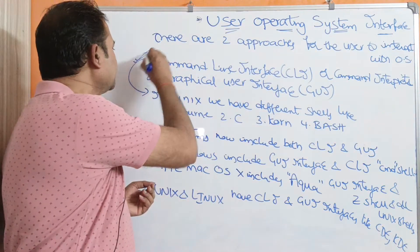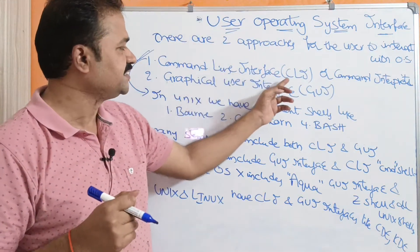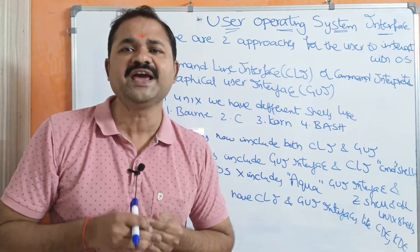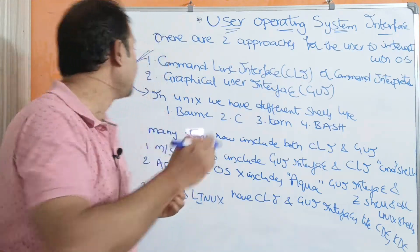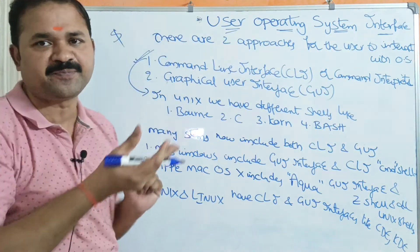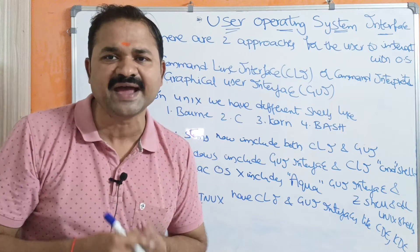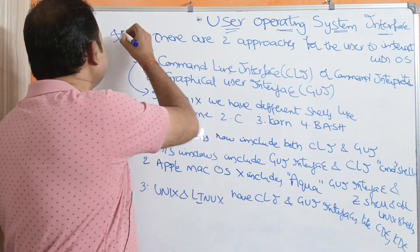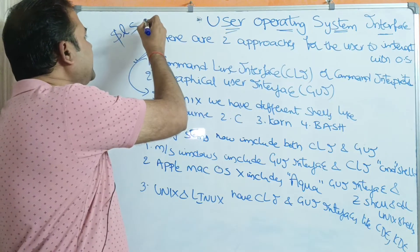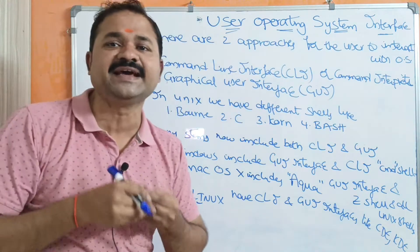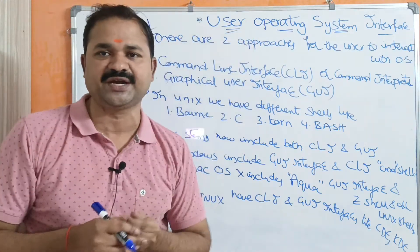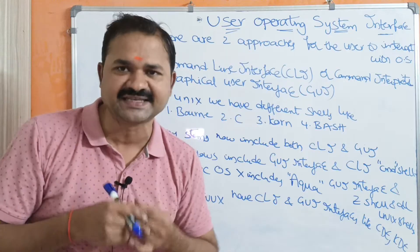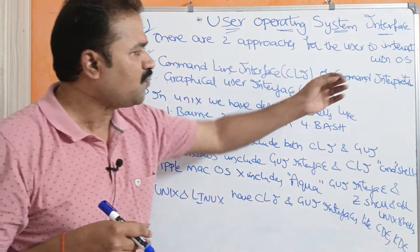First, let us see about the first approach — that is Command Line Interface, CLI or Command Interpreter. It is a window where we can have a command prompt with some symbols like the dollar symbol. We need to type some commands, and after pressing the enter key, the corresponding command will be executed. For example, if we type the ls command at the dollar prompt and press enter, it will list all the files present in the directory.